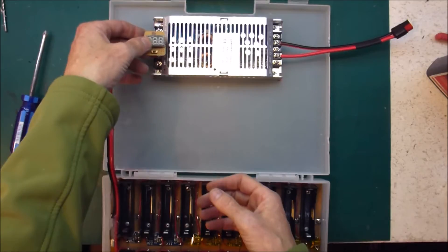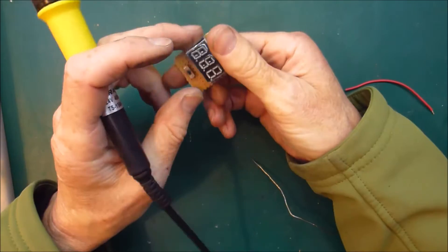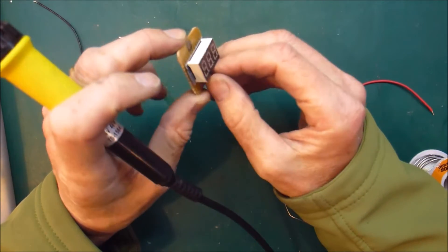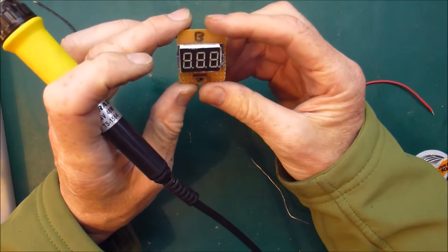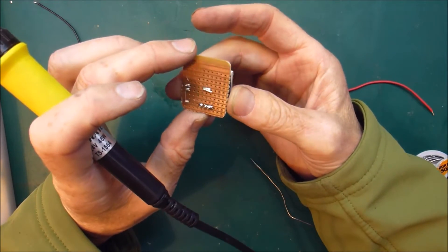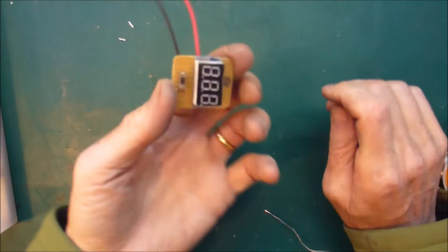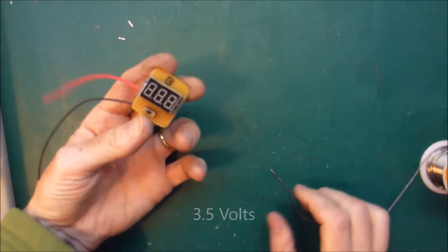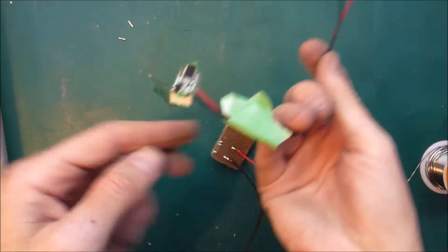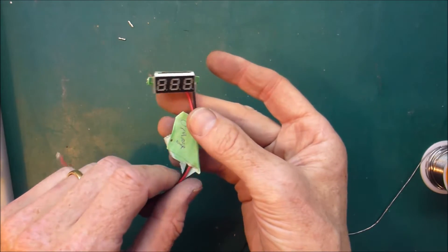Next up, voltmeter. This is just one of these little DC voltmeters that I've added a tiny switch to so I can turn it off if I get sick of looking at it, save a tiny bit of power. It's on a small piece of Vero board. These are the ones that only go down to about 4 volts, so they're not as good as these ones that I showed in a previous video that go all the way down to 2.4.